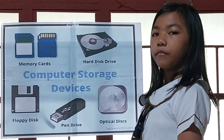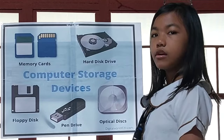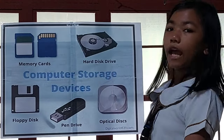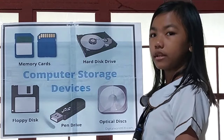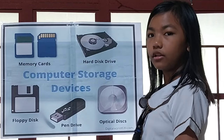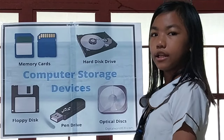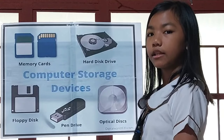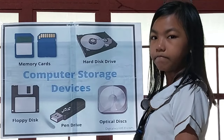Types of computer storage devices. Number 1: Hard disk drive, or HDD. It contains a spindle that holds rotating disks called platters. It is coated with magnetic materials that holds the data.